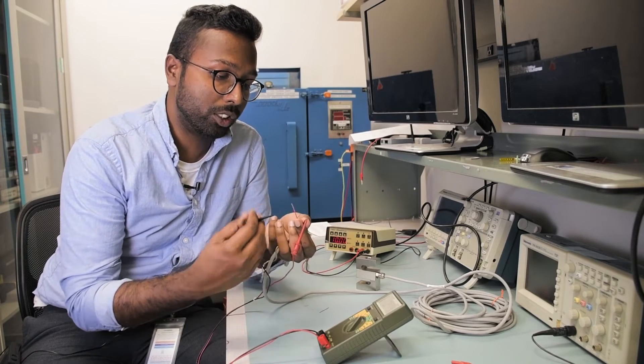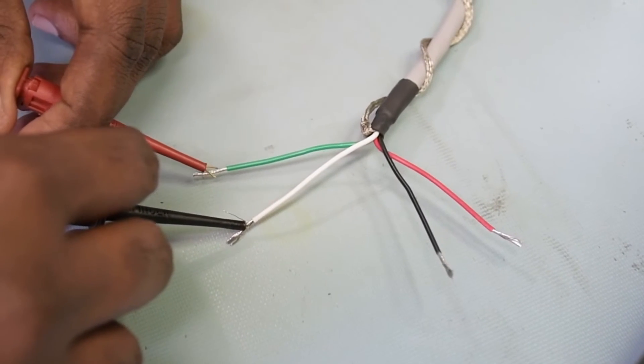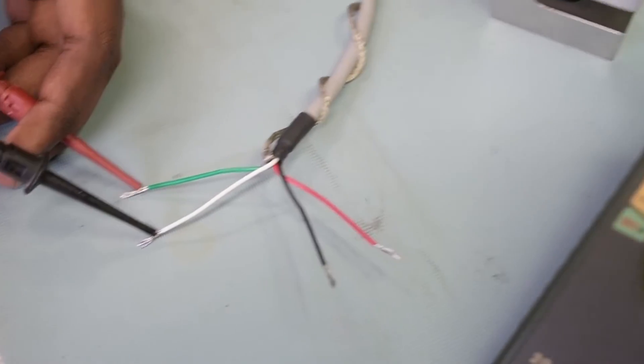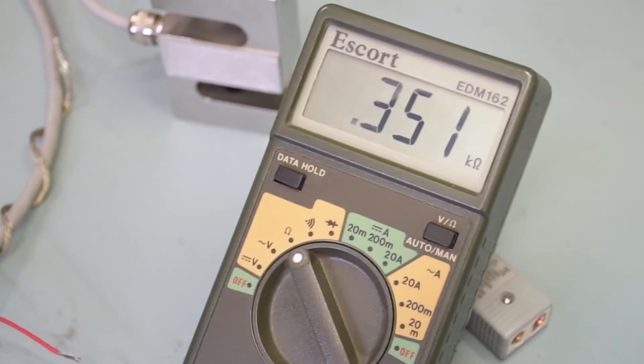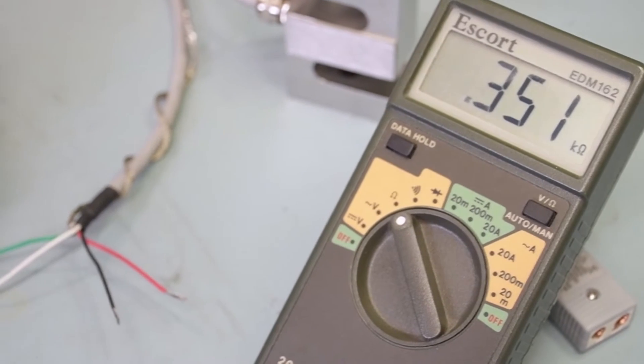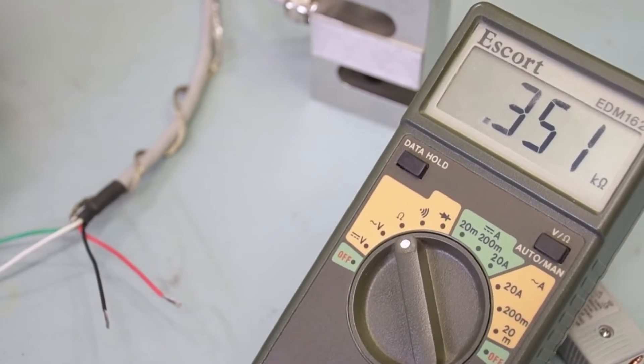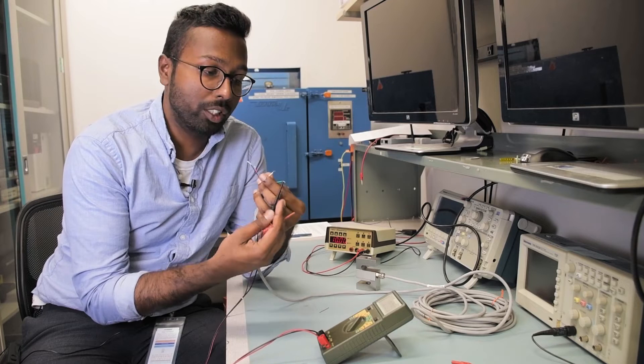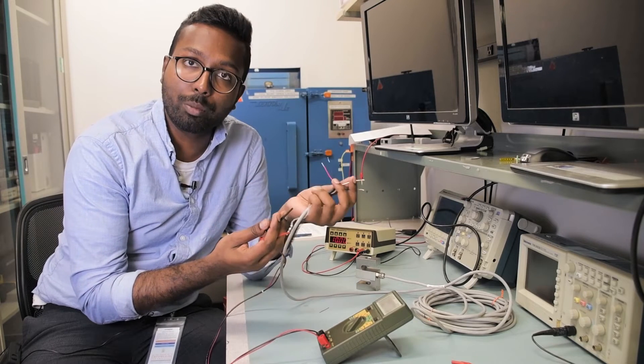Now measure the resistance across your signal leads, which in my case would be across green and white. According to the calibration certificate, it should read 351.70, and I'm reading 351, which is fairly close enough. This indicates a balanced bridge—a balanced 350 ohm full bridge circuit.